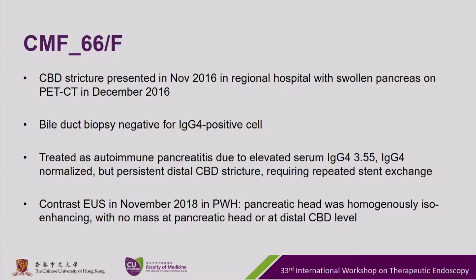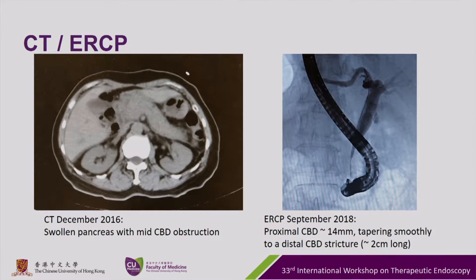Here is the first case in the afternoon session. A middle-aged lady with a CBD stricture presented in 2016 at a regional hospital with a swollen pancreas on PET CT scan. Biopsy was negative for IgG4 positive cells. She was treated as autoimmune pancreatitis due to an elevated serum IgG4 level. Subsequent IgG4 level normalized, but there was persistent distal CBD stricture requiring repeated stent exchange. EUS recently showed a pancreatic head homogeneous ISO enhancement with no mass at the pancreatic head or distal CBD. Here are the CT and ERCP images.